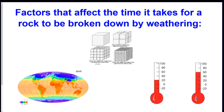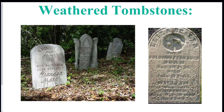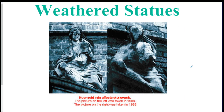Now we're going to talk about how we can make weathering happen faster. There are four things you can do to make things break down faster. Here's a weathered tombstone — you can see the words are illegible, which probably happened from the weather. And here's a statue whose face is gone — this happened over the course of about 60 years, again from weather.